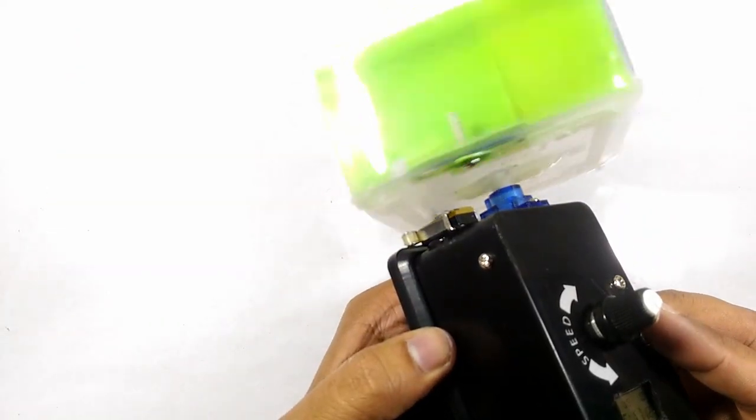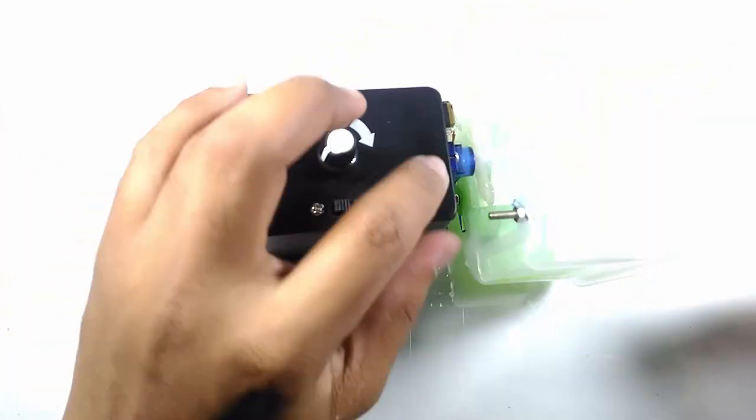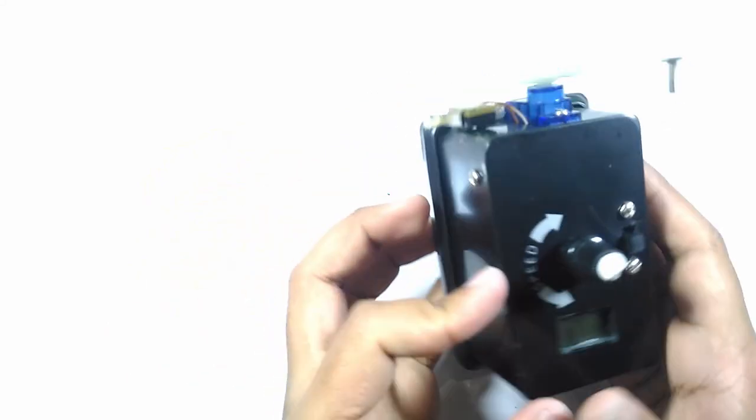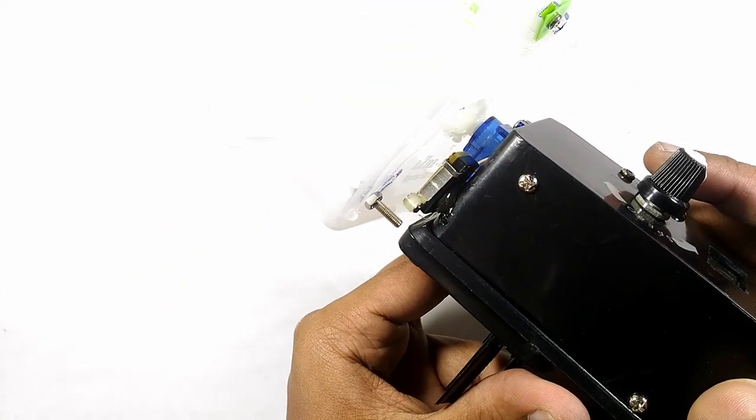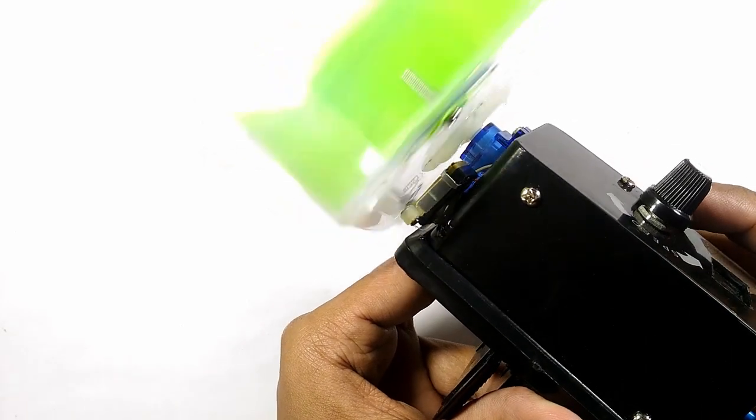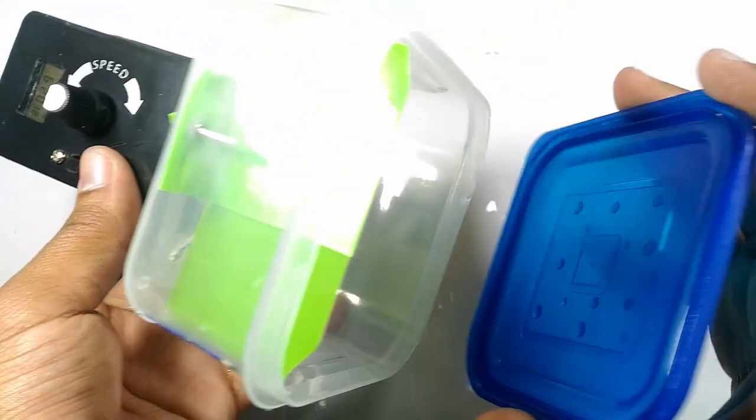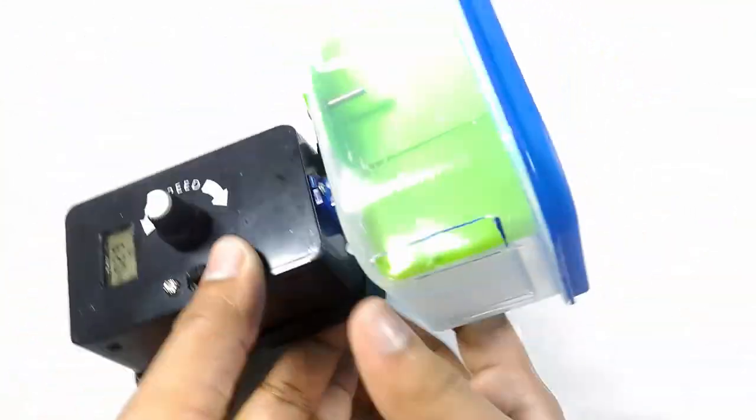On the initial test, the servo keeps running without stopping after one turn. So we need to adjust the bolt which is supposed to trigger the micro switch. It seems to trigger properly on the second test. I added the cover of the container and tested it again. It seems to work perfectly.